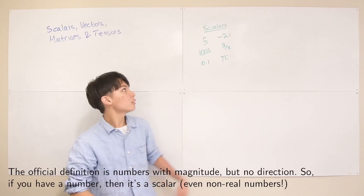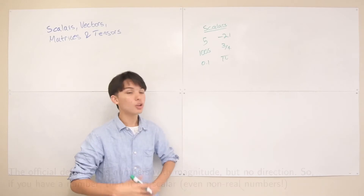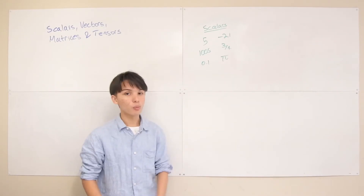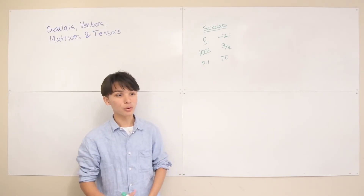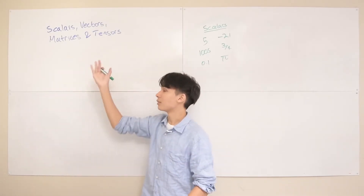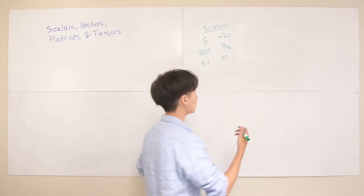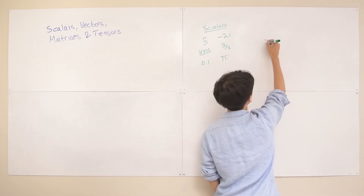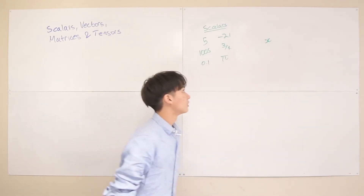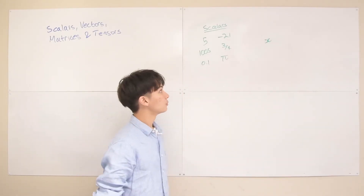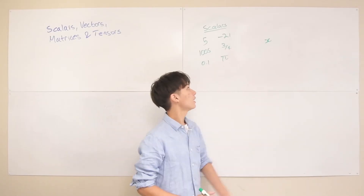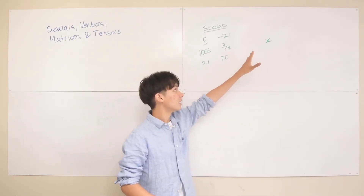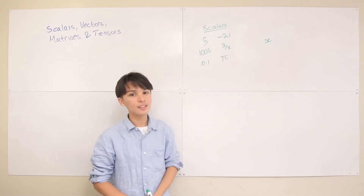What we also want to talk about with scalars is how we can know if a variable, stated somewhere in a textbook or on the whiteboard throughout this course, is a scalar or some other mathematical object like a vector. Generally we represent scalar variables with some lowercase letter — like x is kind of the default. Because it's lowercase and not bolded, x is going to be a scalar.